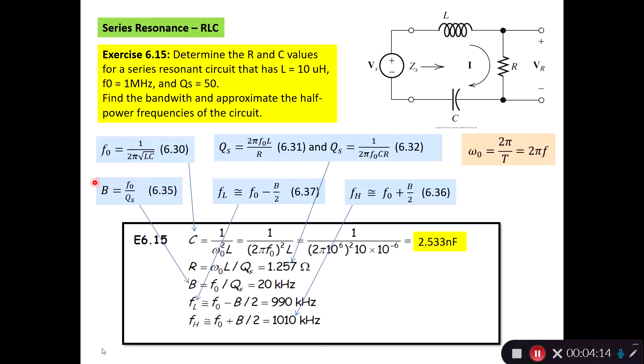We also can find the bandwidth by help of knowing the resonance frequency and knowing the quality factor of the resonance circuit. And we know when Q is bigger, the quality factor is bigger than 10, we can use the approximated frequencies here for the lower part of the frequency, the half-power frequency of the circuit, the lower part fL, and for the higher part fH.